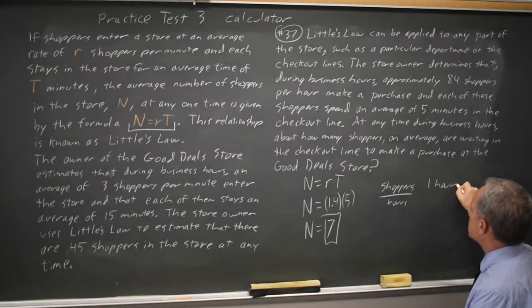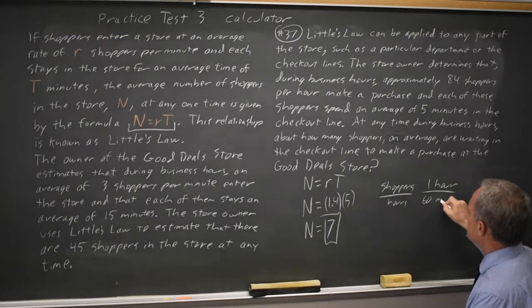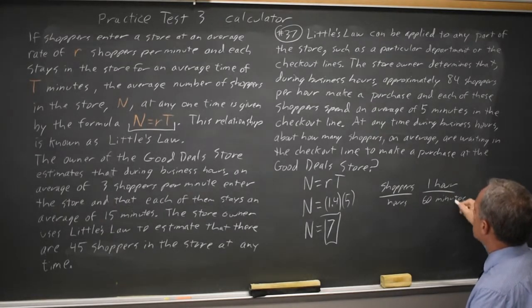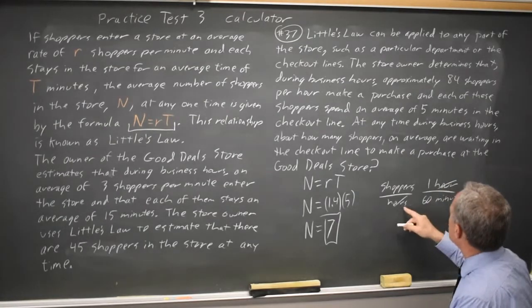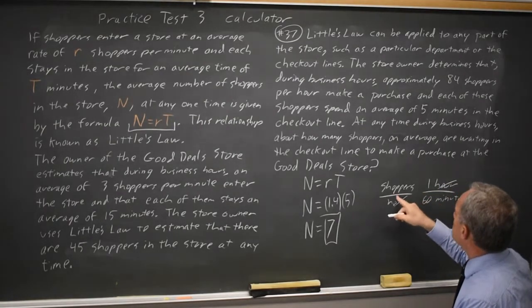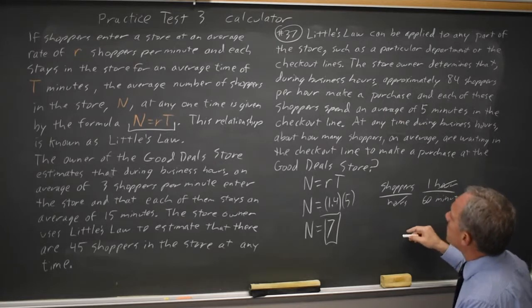If you multiply by 1 hour over 60 minutes, the hours cancel. We do this for units in chemistry often, and that gives you shoppers per hour divided by 60 will give you shoppers per minute.